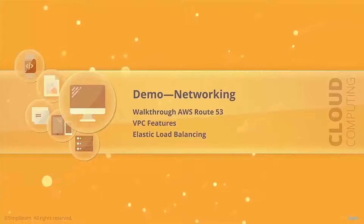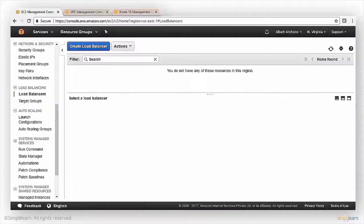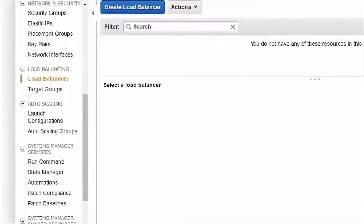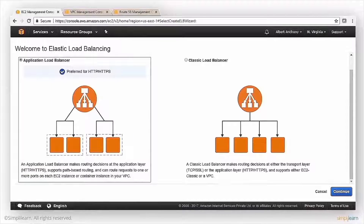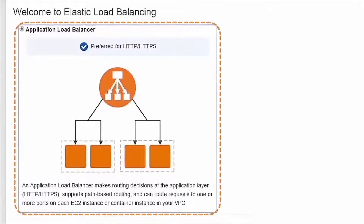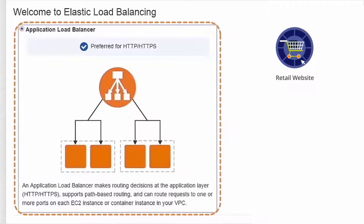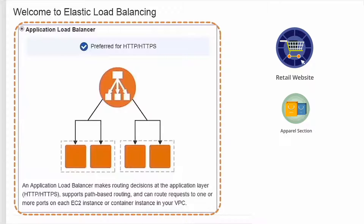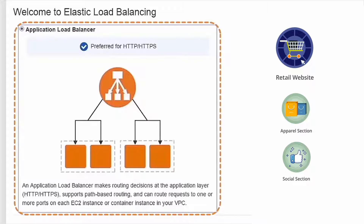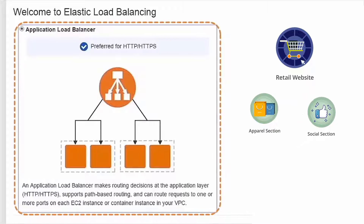Let's go to the console and take a look. Right now I am in EC2 and at the load balancers. If I click on the load balancer, I can have two types: an application load balancer. Think about this — if I am a retail website and I have sections like apparel, sports, outdoors, and a social section, and I want load for all these sections to be managed separately.